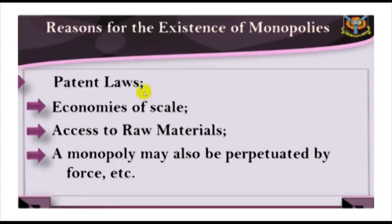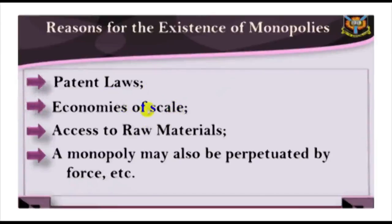Reasons for the existence of a monopolist: First, patent laws may create and perpetuate monopolies by conferring under patent order the sole right to produce a particular commodity. Government may grant a firm a charter or franchise that prohibits competition by law. Second, economies of scale — monopolies may also arise because of economies of scale. The established firm may retain a monopoly through a cost advantage because it can produce at a lower cost than any new and necessarily smaller competitor.